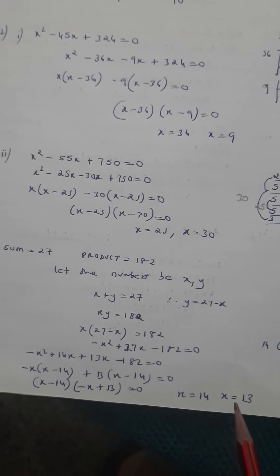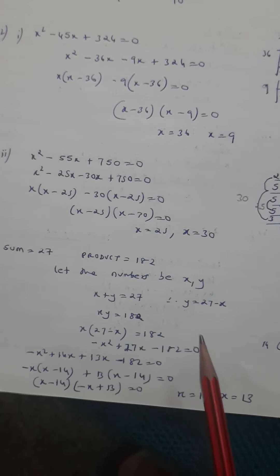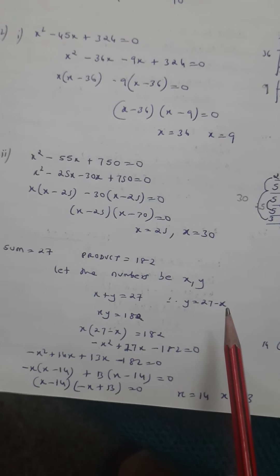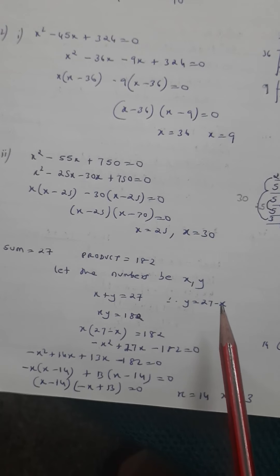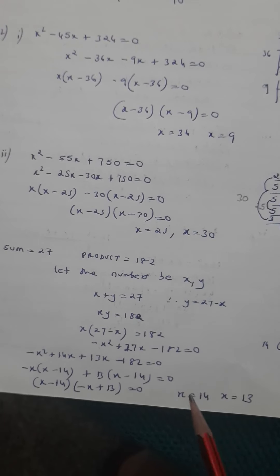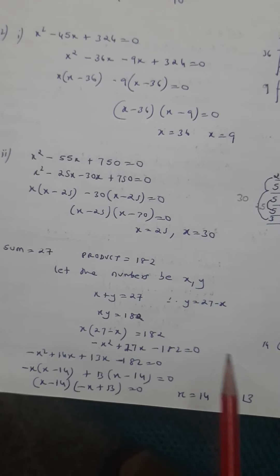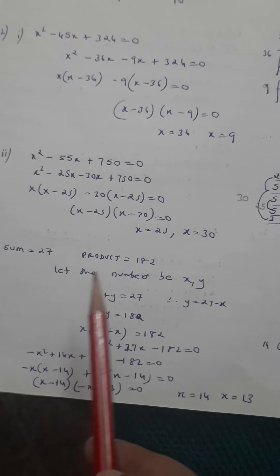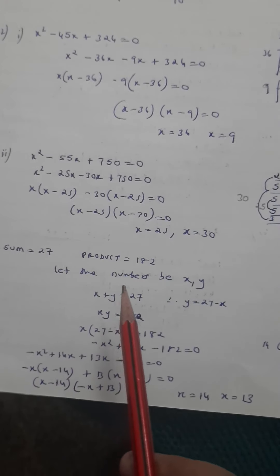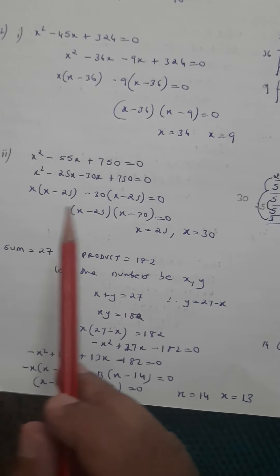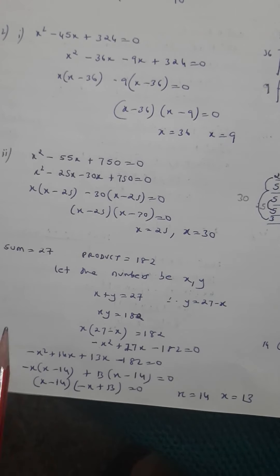Taking common, the factors are (x minus 14) and (minus x plus 13). Equating both brackets to zero gives x equals 14 and x equals 13. So if the first number is 14, the second is 27 minus 14, which is 13. If the first number is 13, the second is 27 minus 13, which is 14. The two numbers are 14 and 13. All the problems here are solved by splitting the middle term — no other formula is used.